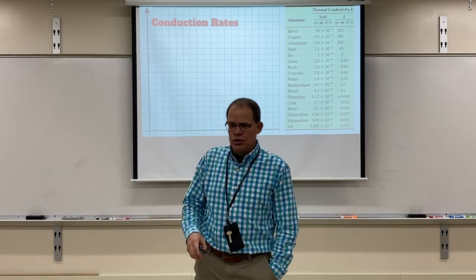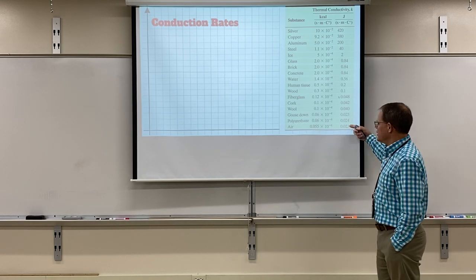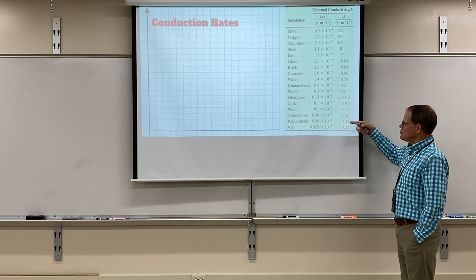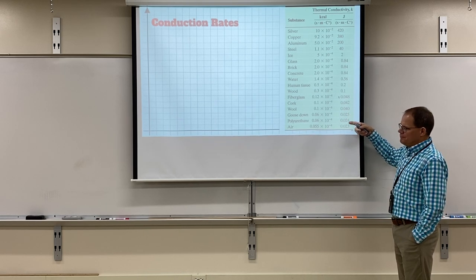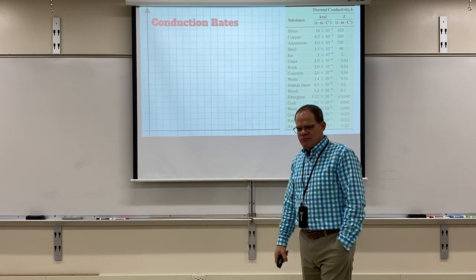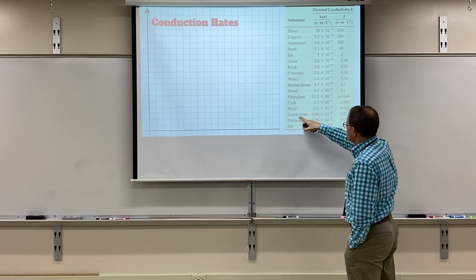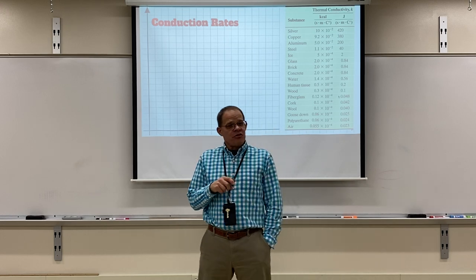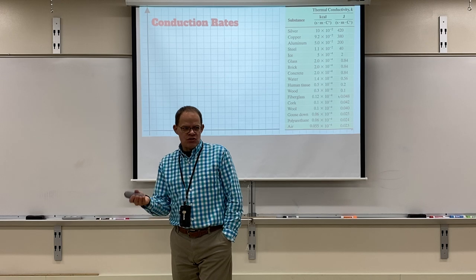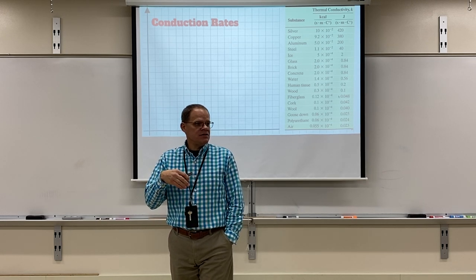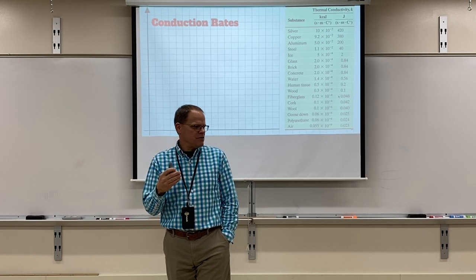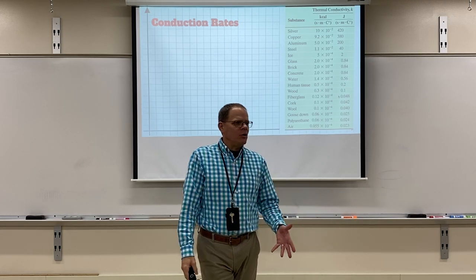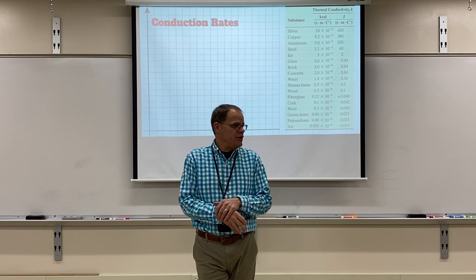If you don't want to conduct heat, you want an insulator. Air is a terrible conductor — a great insulator. Polyurethane, goose down — all around 0.023–0.025 watts per meter per degree Celsius — they all have something in common: they trap lots of air. Air is a terrible conductor, so it's a great insulator. At night when you're shivering in bed, your body is producing heat and you just don't want it to leave, so you put a blanket on.